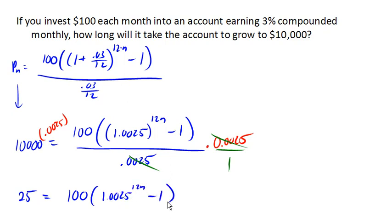So now let's get rid of that 100. So we're going to divide both sides by 100, which will reduce it on the right. On the left-hand side, 25 divided by 100 is .25.